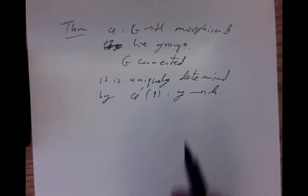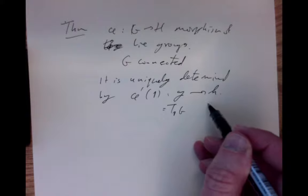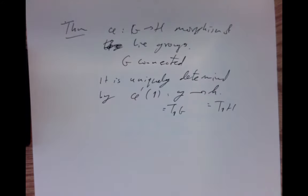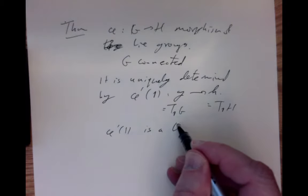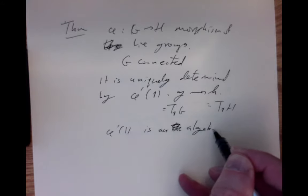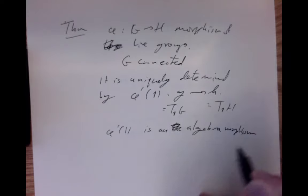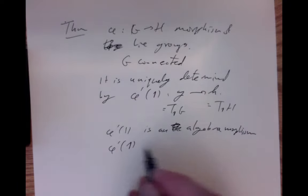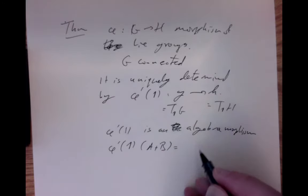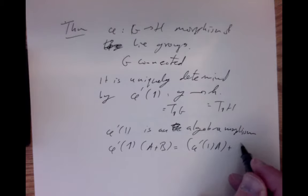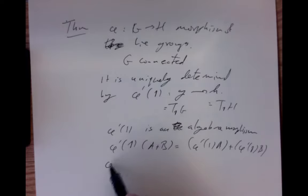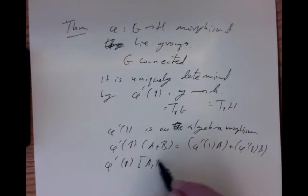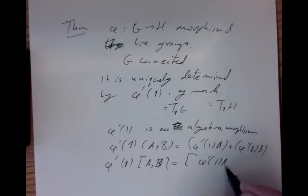Also, the derivative of phi at the identity is a Lie algebra morphism — an algebra morphism. What does that mean? It matches up the algebra structure, which is the bracket. It's linear, since it's the derivative, the linear approximation. And it takes multiplication to multiplication — the multiplication here being the bracket operation. That's what we mean by an algebra morphism.